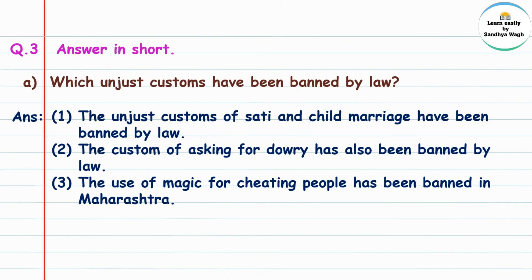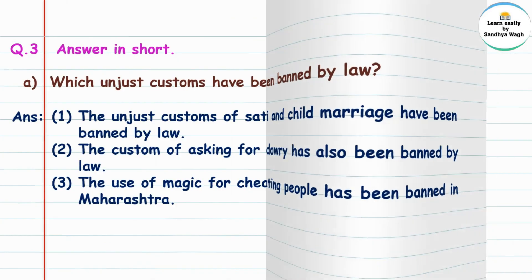The use of magic for cheating people has been banned in Maharashtra. Lokanchya faswanukisathi jadu cha vapar karne as Maharashtraat bandi ghalnyat ali ahe.